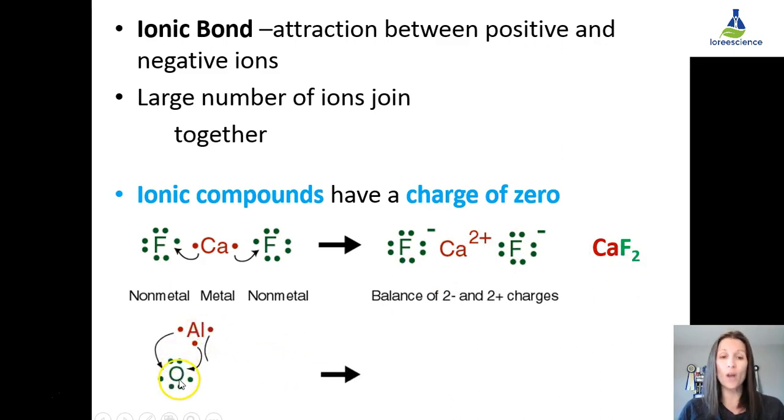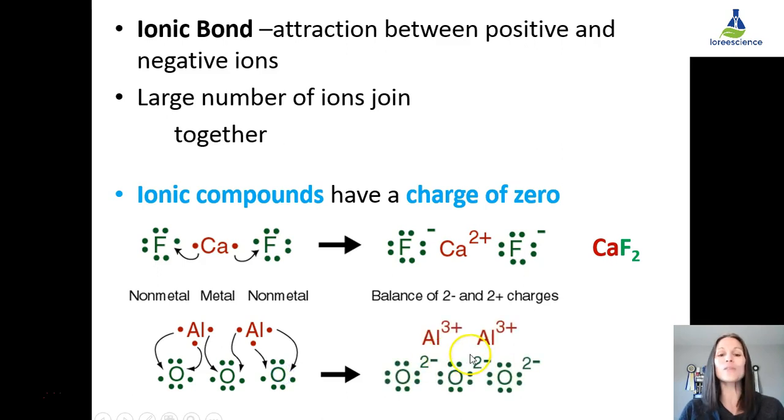Take a look at aluminum and oxygen. Oxygen can take two of the electrons from aluminum. Aluminum still has one more to give, so you draw another oxygen. Oxygen can take one, but that oxygen still needs another, so you draw yet another aluminum, it gives one of that oxygen. That second aluminum still has two more to give, so you would draw another oxygen in order to have net charge.